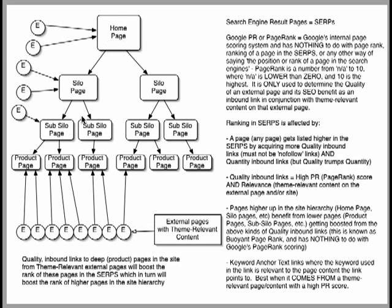However many levels deep — whether it's three or four levels deep — ultimately everything is thematically relevant, and the silo structure follows this kind of linking where the home page links to the silos, and the silos link to sub-silos if you have them, or just your article pages, which might be product pages on an e-commerce site.